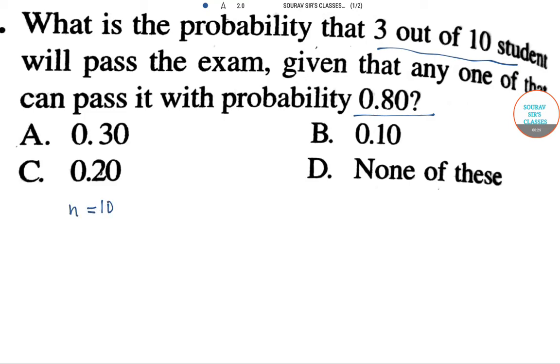the number of students is 10, n equals 10. We have to follow a binomial distribution, which is given by ncx p to the power x q to the power n minus x, where p is the probability and q and p relation is p plus q equals 1.